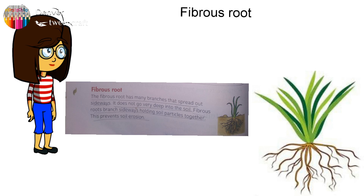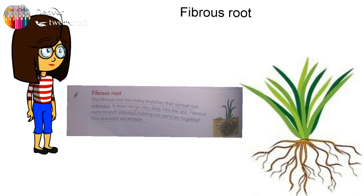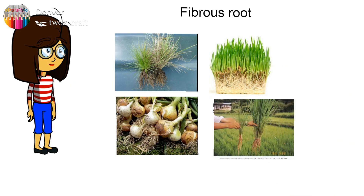Fibrous roots branch sideways, holding soil particles together, which prevents soil erosion. All types of grasses have fibrous roots. Spinach, rice, and wheat are also types of grasses and hence have fibrous roots. Unlike tap roots that go very deep into the soil, fibrous roots spread into the soil with their tiny branches. Examples of fibrous roots include all grasses, wheat, onions, and garlic.